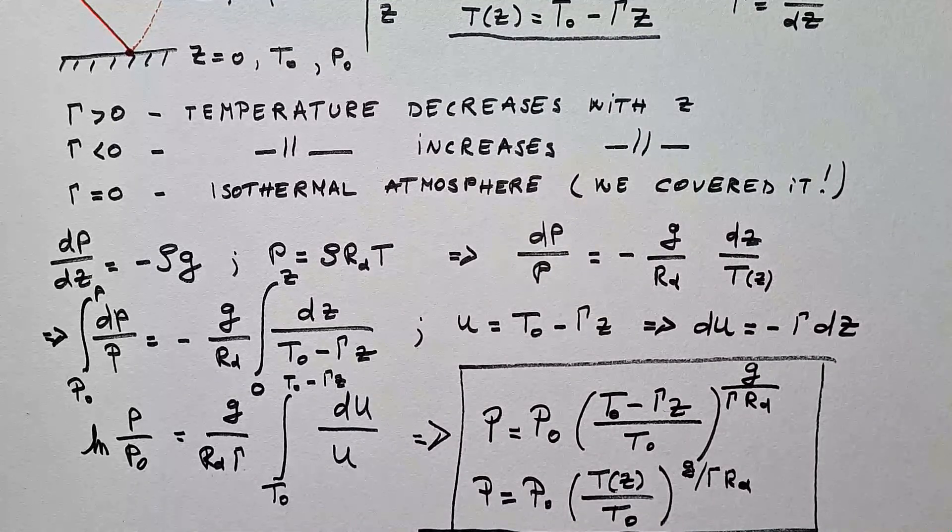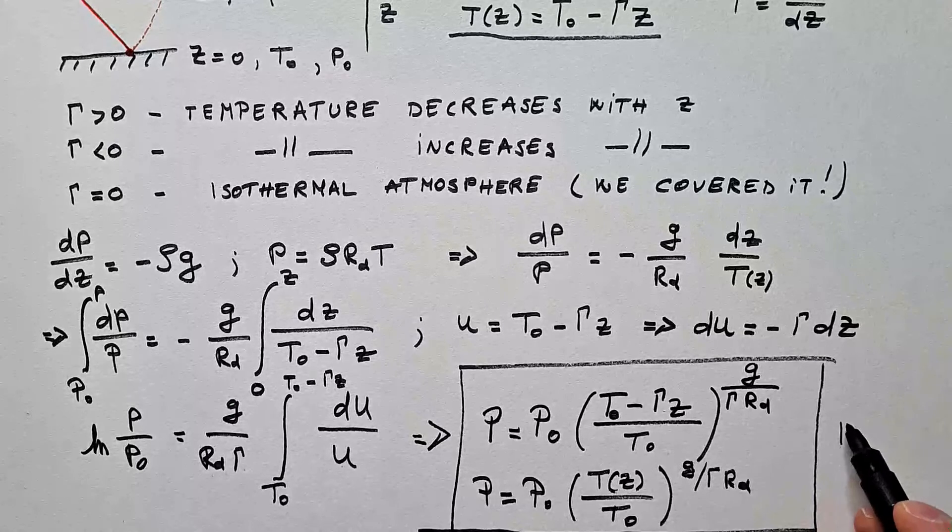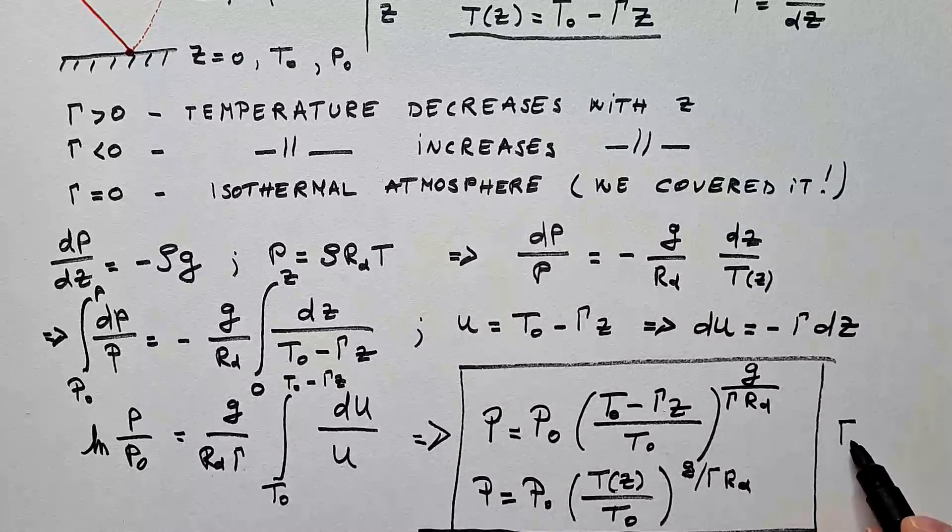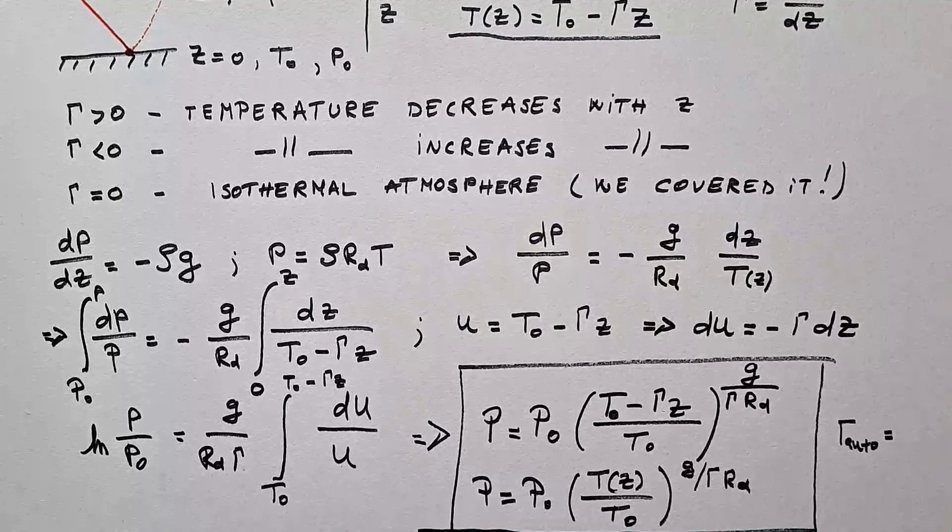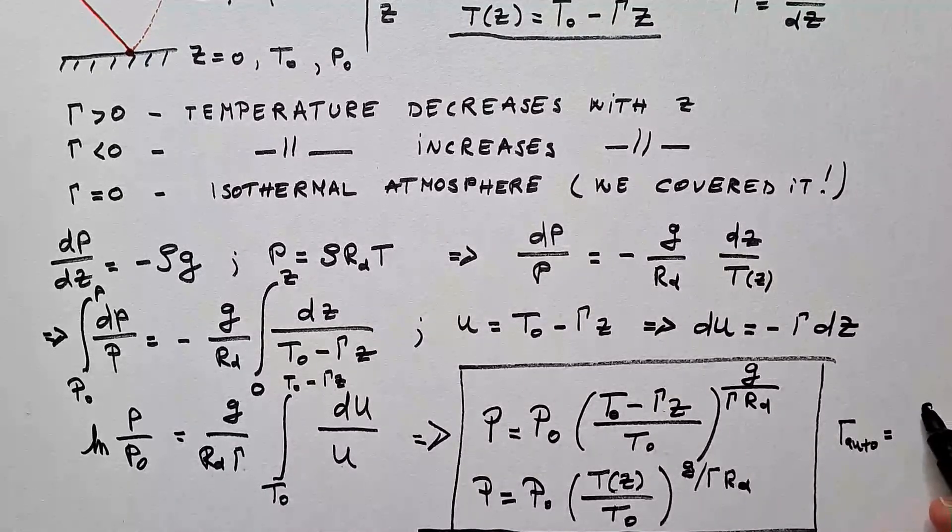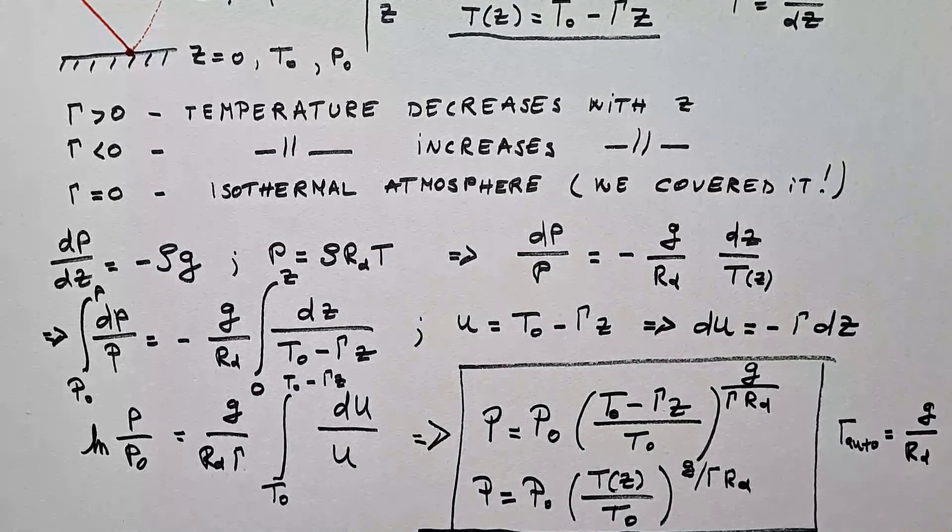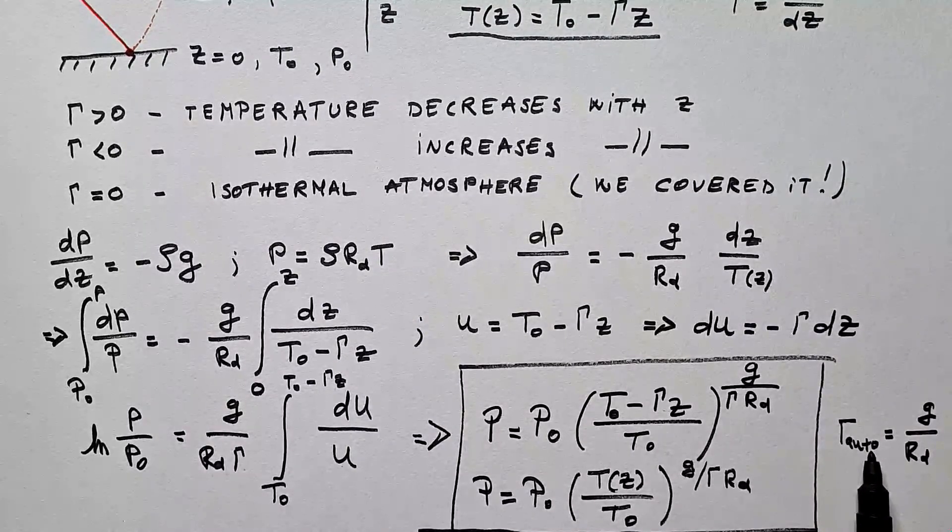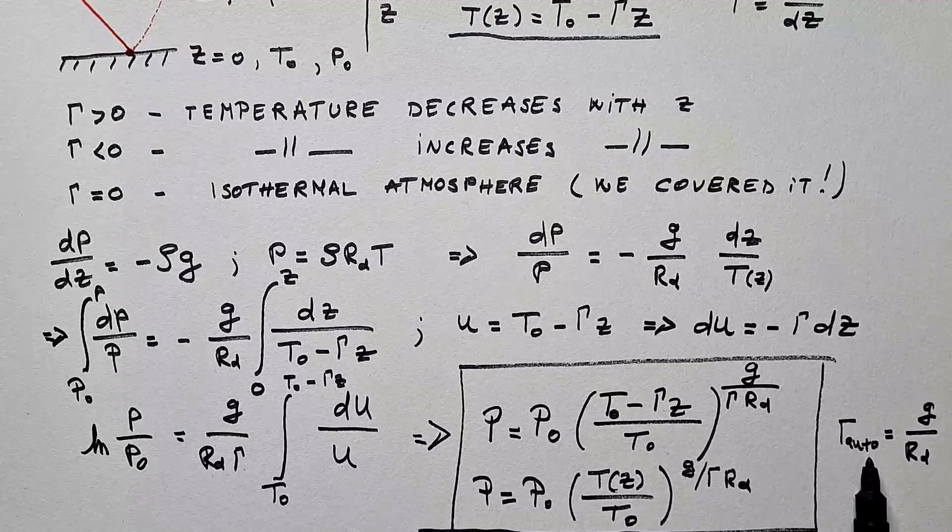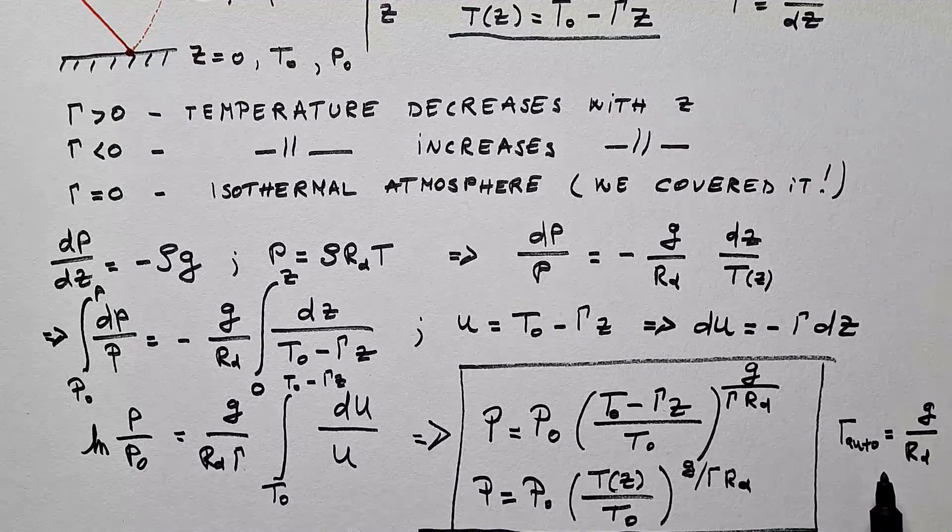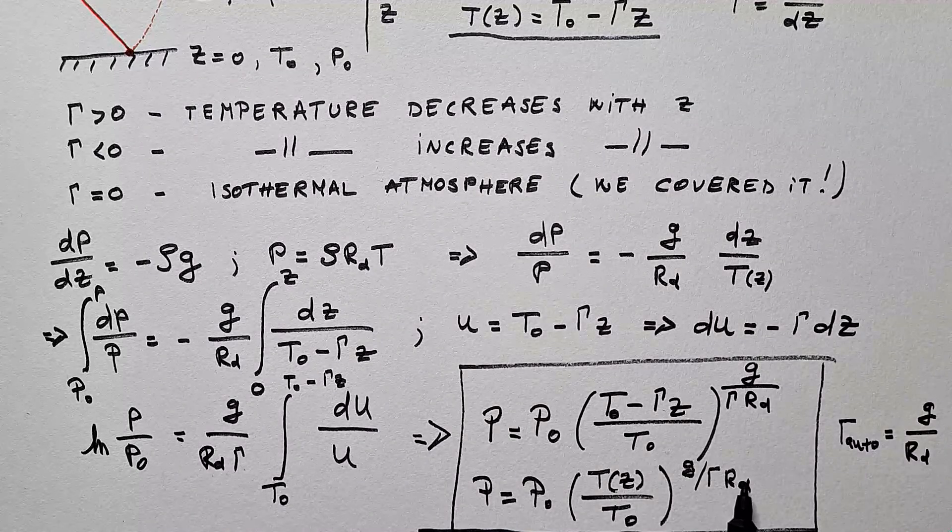Now, I also hope that you will remember from my previous video that we introduced some special γ, which is the autoconvective temperature lapse rate, and it was g over Rd. And this is the temperature lapse rate that needs to be satisfied in order for density to be constant with the height.